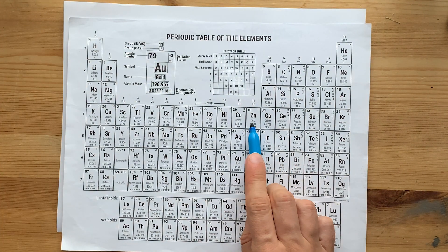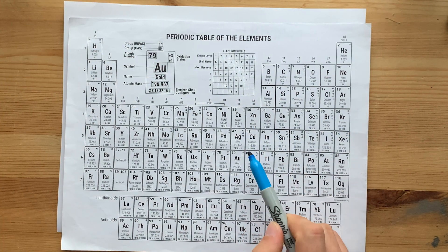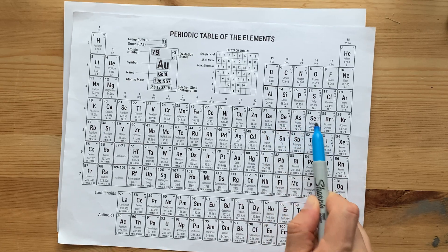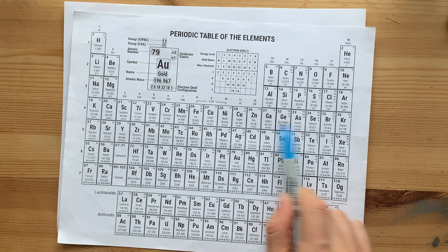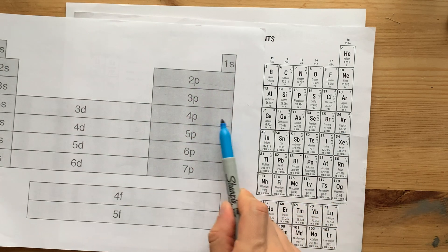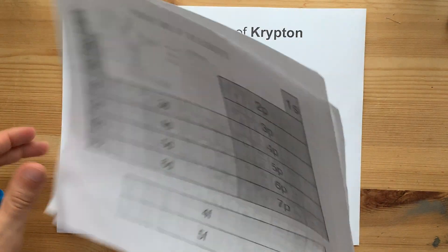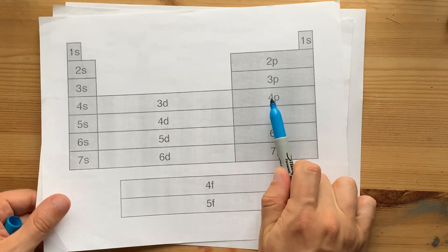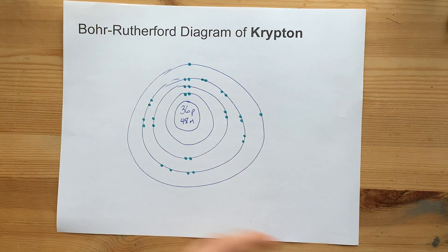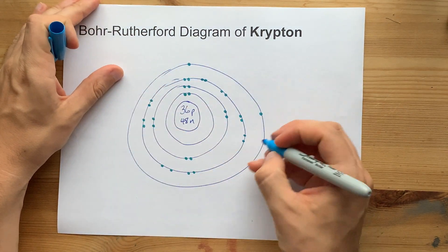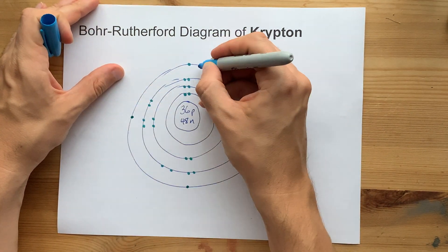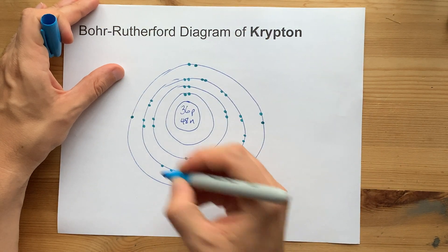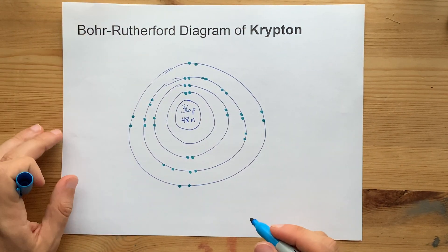That takes us all the way to here, but we need to get to Krypton. Krypton has one, two, three, four, five, six extra electrons, and they go into the 4p. Well, 4p is the subshell. It's the fourth energy level. So I go to my fourth circle. One, two, three, four, five, six extra electrons.